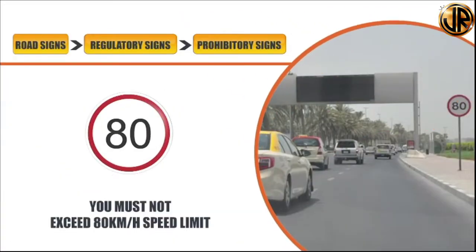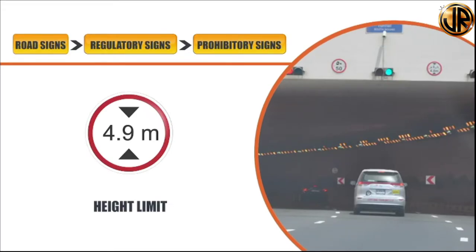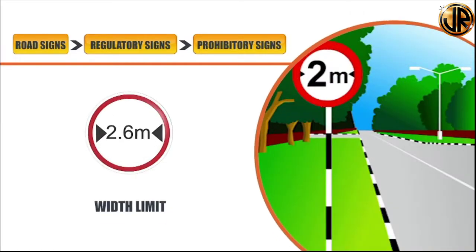The maximum speed sign displays the maximum speed limit allowed to drive on that road — you must not exceed the limit as posted. Violating the speed limit can lead to accidents and may attract fines. The maximum height limit sign shows the height limit of the road structure ahead, usually found at tunnels, under bridges and covered parking — vehicles including or excluding load above the mentioned height are prohibited. The maximum width sign shows the maximum width permitted, imposed to prevent entry to roads incapable of accommodating larger vehicles; it can be seen near tunnels, bridges and basement parking.